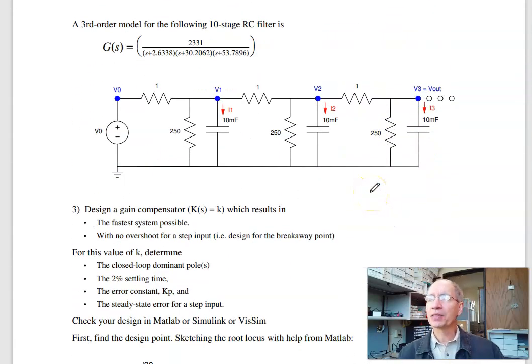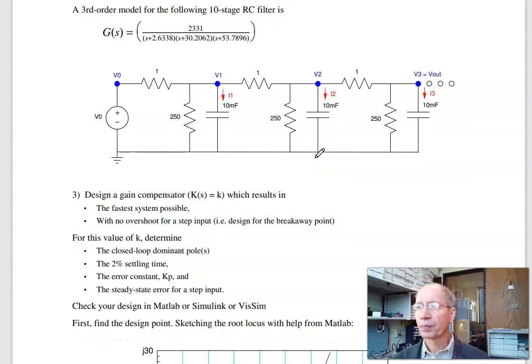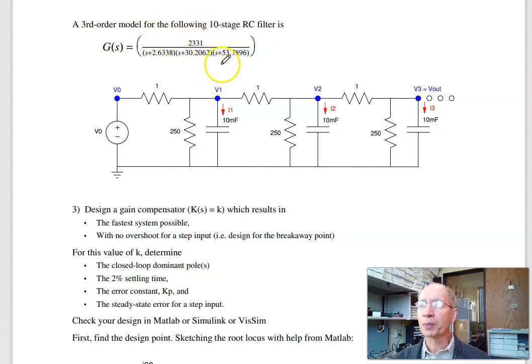Problem three is gain compensation. Suppose I have a tenth stage RC filter. Come up with a feedback gain that makes it as fast as possible with no overshoot. And I'm going to use a third order model for the plant.